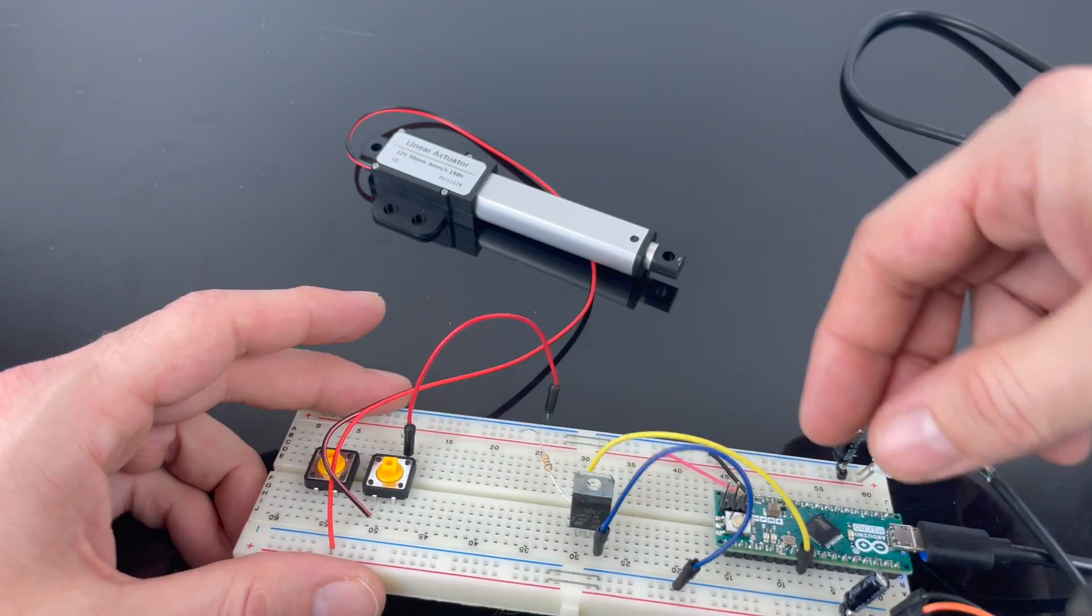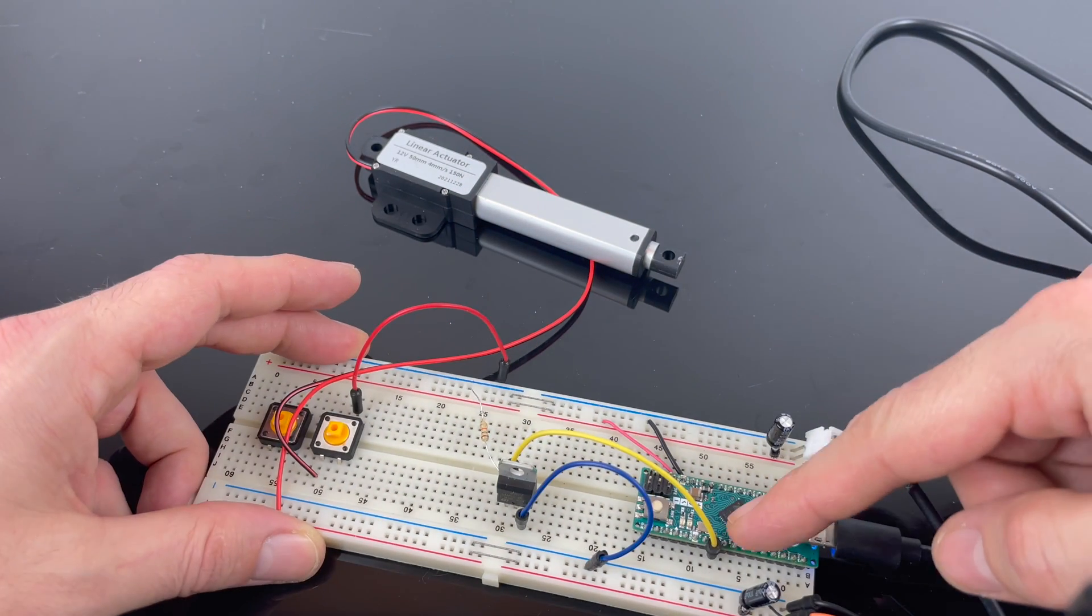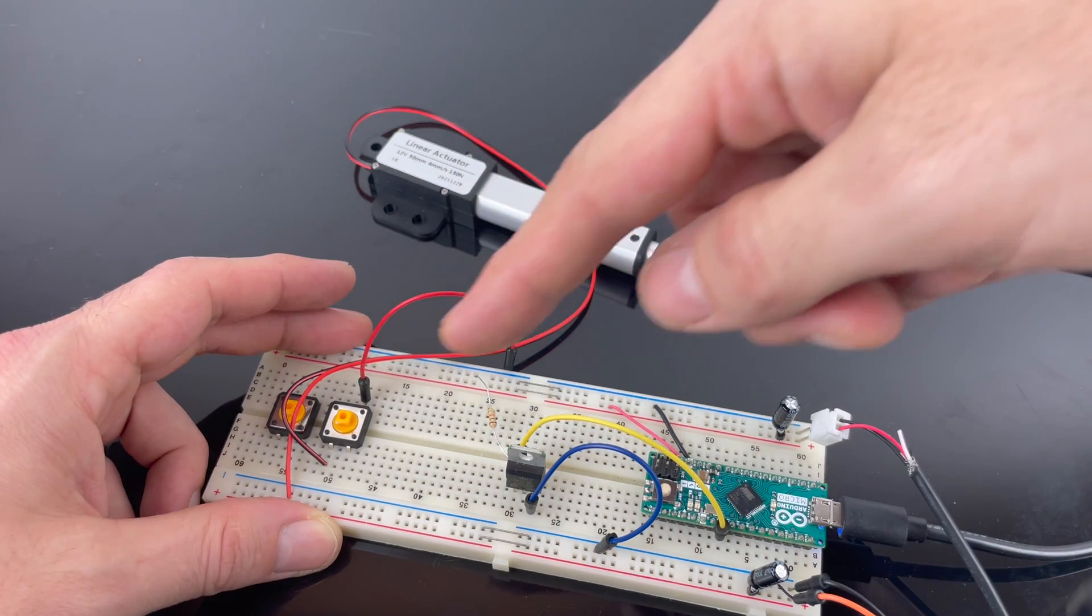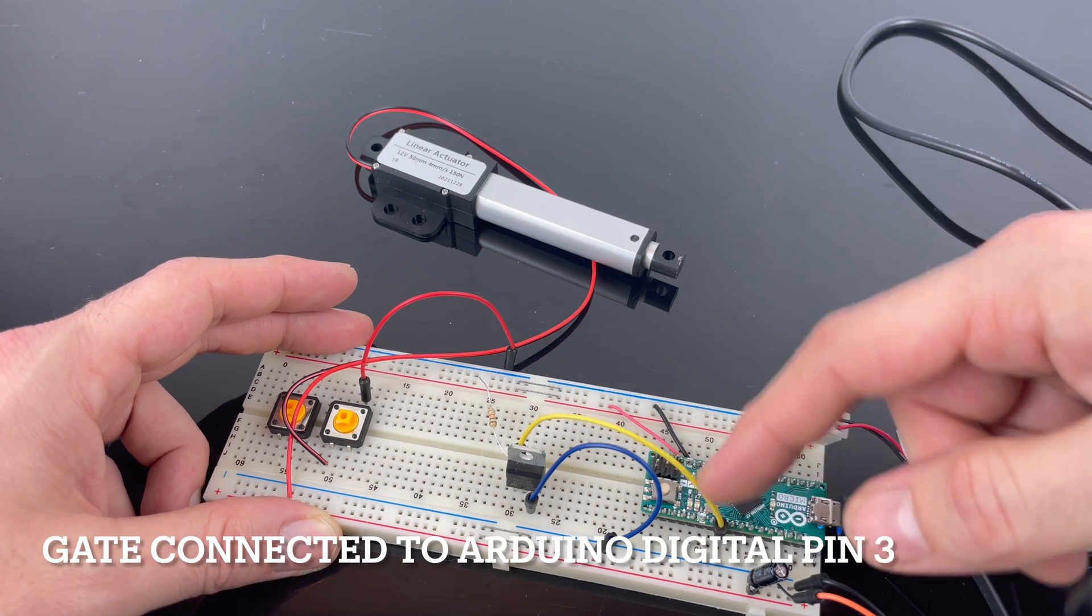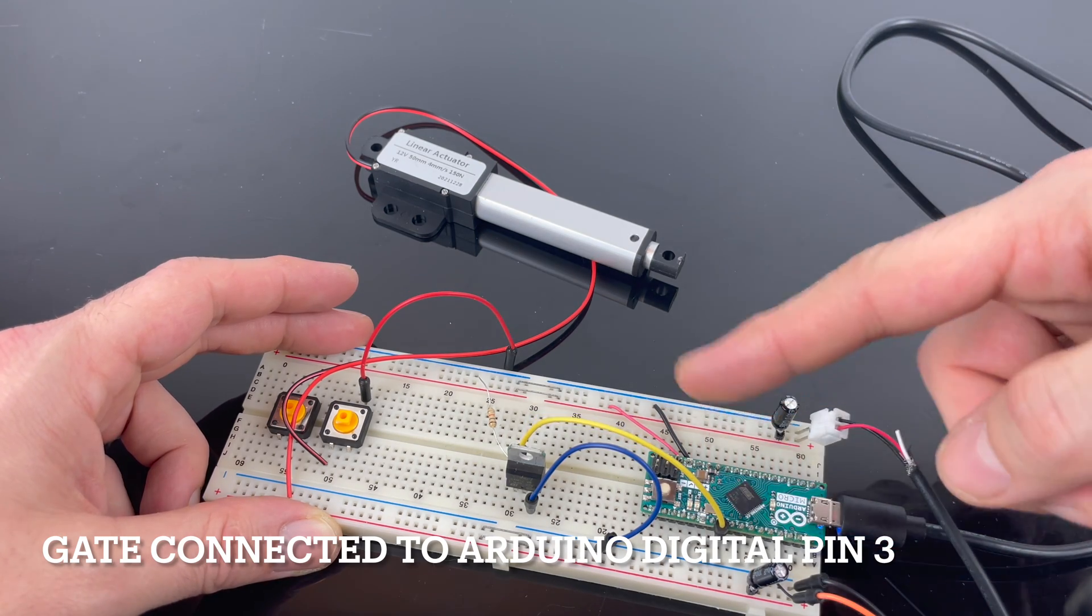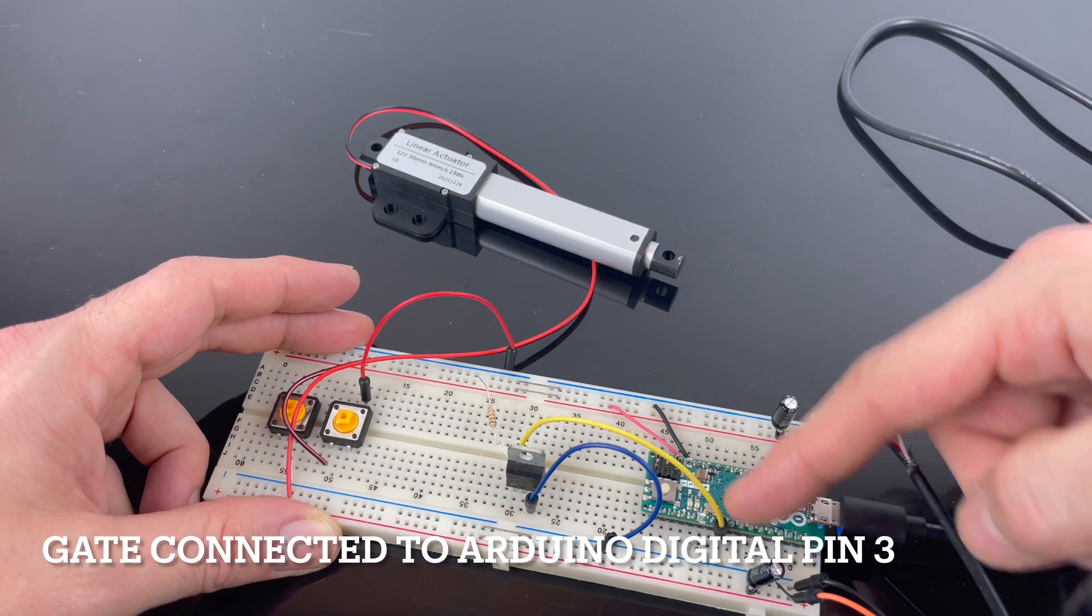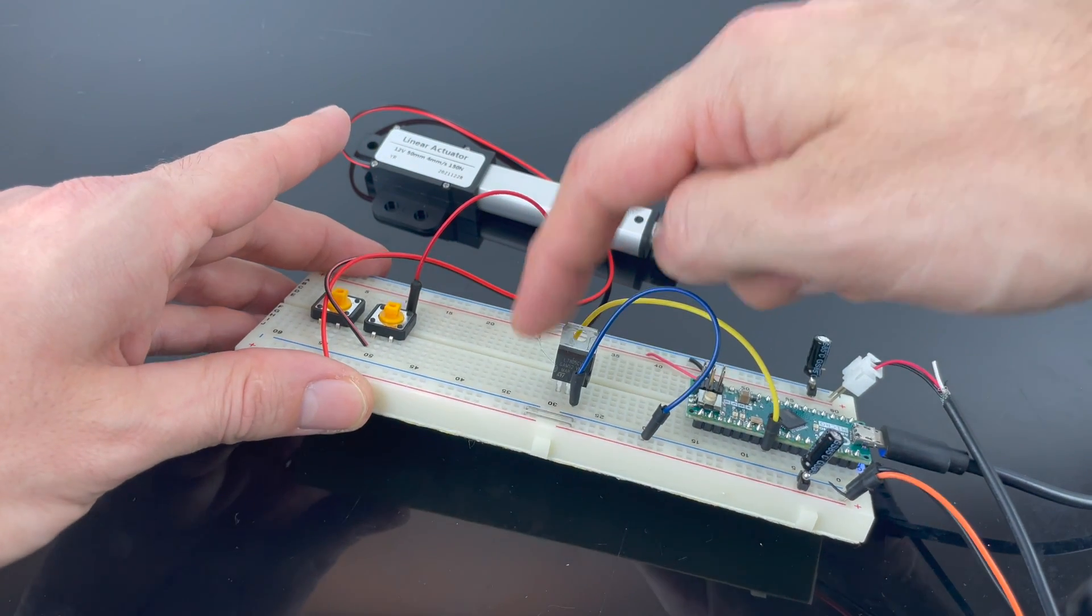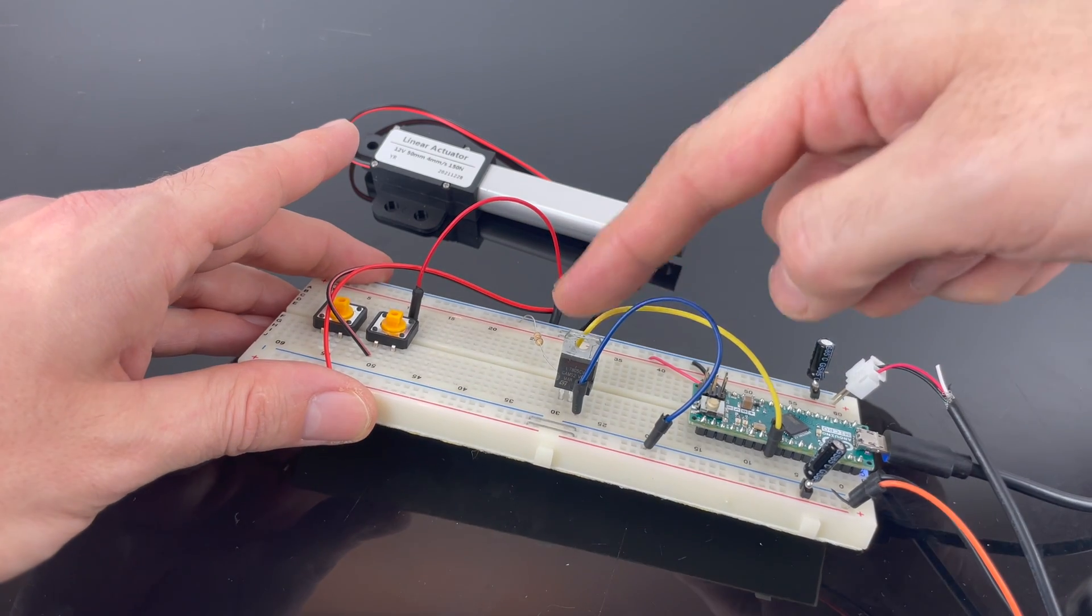And then we have the Arduino connected to pin number three. Right now I'm not controlling it with the code from the Arduino I'm controlling it through the button but I'm still connecting it because I'm gonna do that later. So it's connected to pin number three on the Arduino and it's connected on the outer left side on the MOSFET.